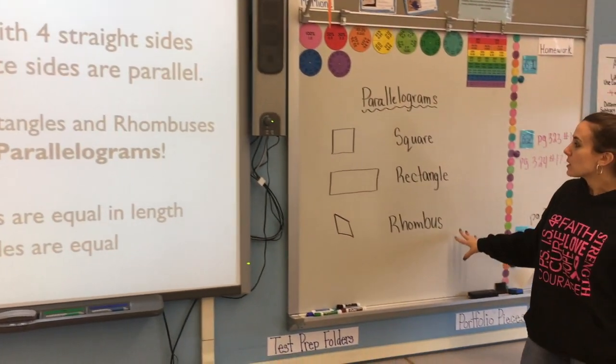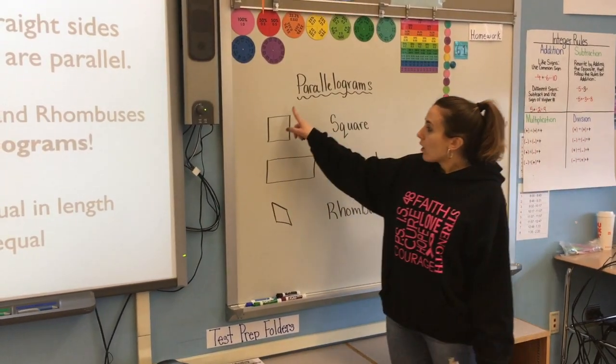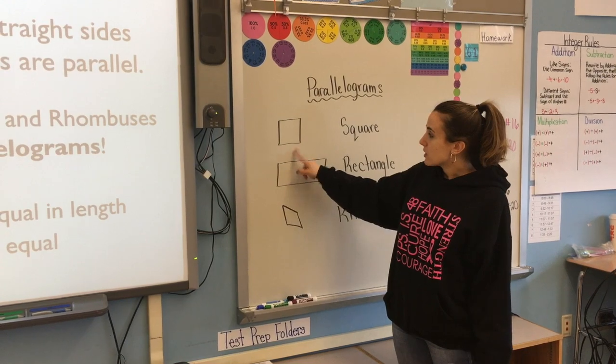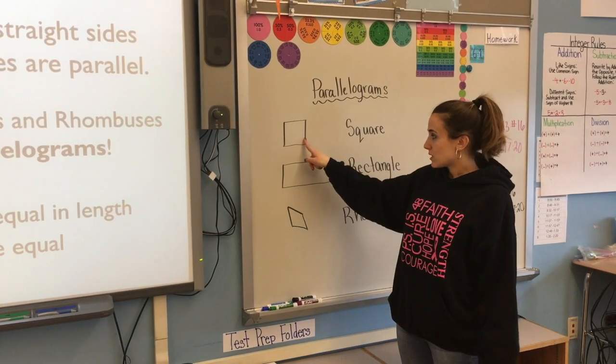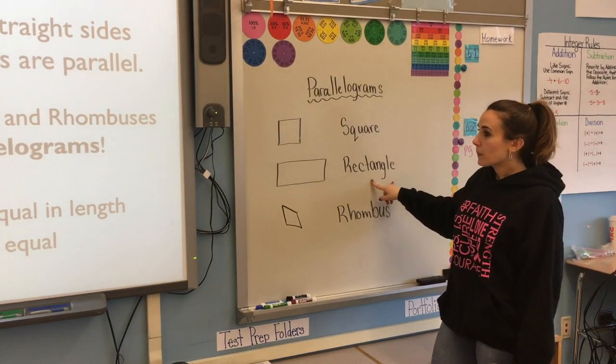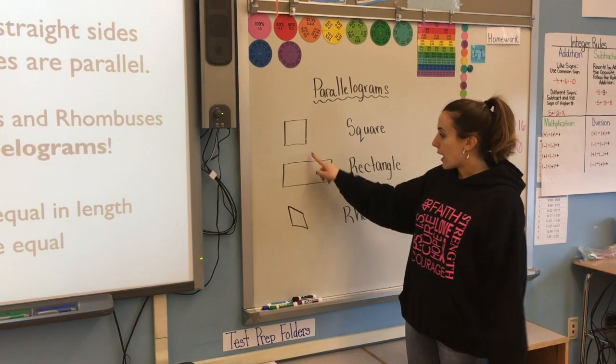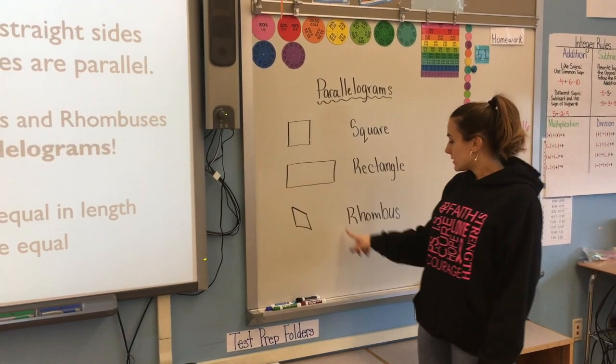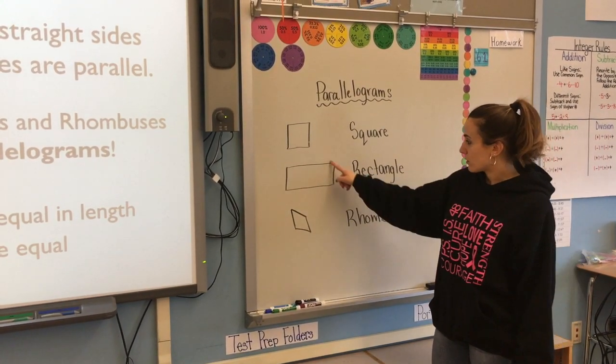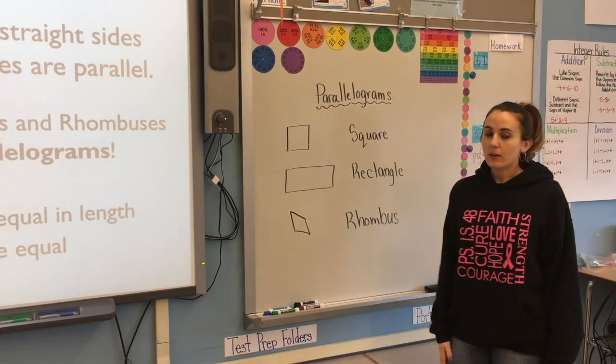So if we look at some of our examples, if you look at a square, although not just their opposite sides are equal, all sides are equal. That's a property of a square. A rectangle, although not all of them are equal, their opposite sides are equal. Same thing with the rhombus. And if you look at their angles, their angles would also be equal to one another.